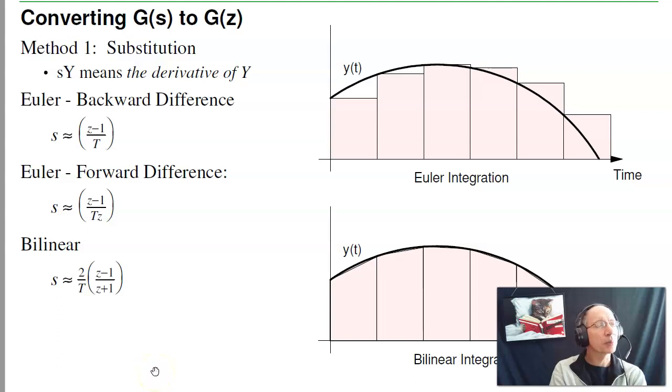So one way to analyze a system like this is convert everything to the Z-plane. Which leads to the problem: given an analog system G(s), how do I find the discrete time equivalent? There are a couple ways to do it.